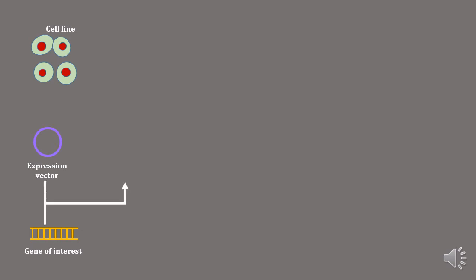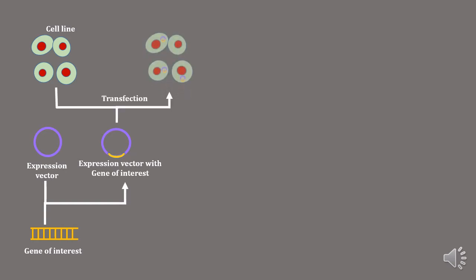The first step is the insertion of the gene of interest in the expression vector, and we will generate a recombinant expression vector by this method. This recombinant expression vector will then be transfected into the cell line. The cells will be selected for the antibiotic resistance which is present on the recombinant vector.